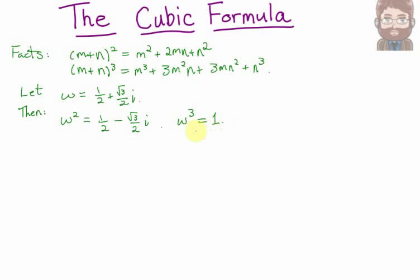And from the equation w³ = 1, if we divide both sides by w, we get w² = 1/w — its multiplicative inverse is its square. And dividing both sides by w², we get w = 1/w². We'll use that later on.